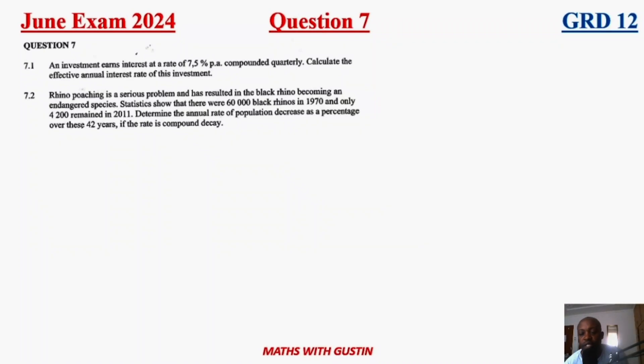Now let's have a look at question seven. Question seven was a financial math question with 7.1 seeing an investment earns an interest rate of 7.5% compounded quarterly. Calculate the effective nominal rate of this investment.